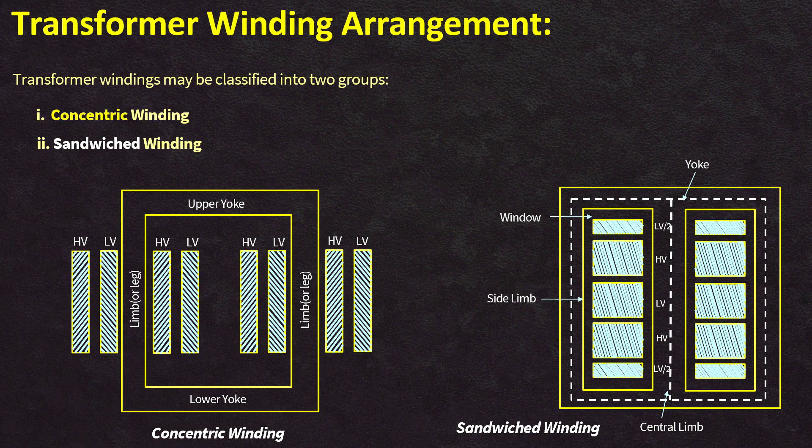Each winding in the concentric arrangement has a common center forming circles in each cross section. In sandwich windings, the high voltage and low voltage windings alternate along the leg height. Because of easier insulation, concentric winding places low voltage winding closer to the core, while sandwich winding places it on the outside. The insulation spaces between low and high voltage coils also serve to facilitate cooling.